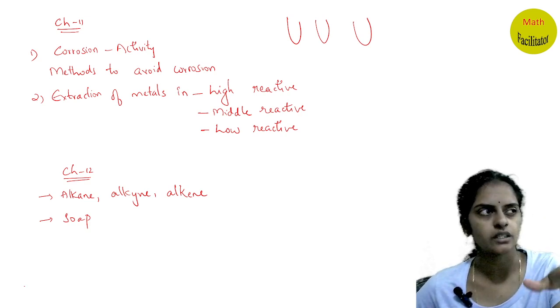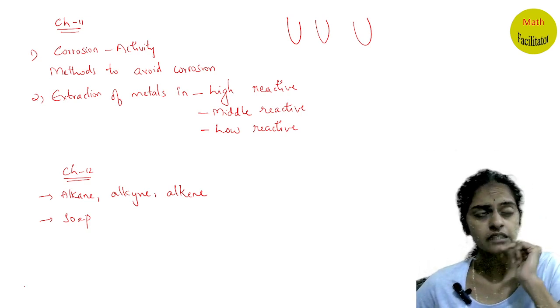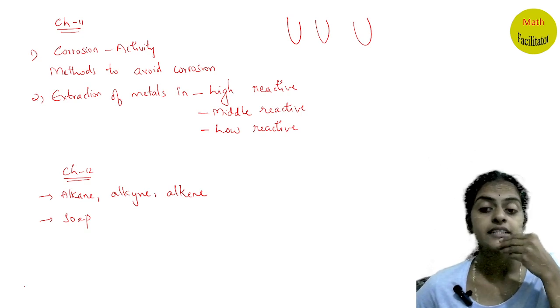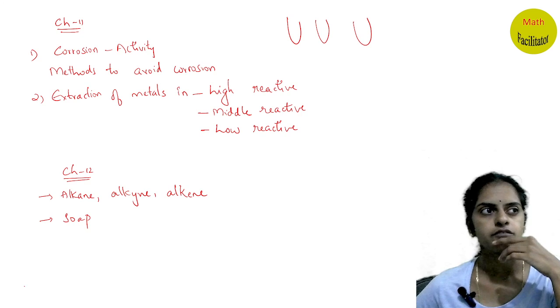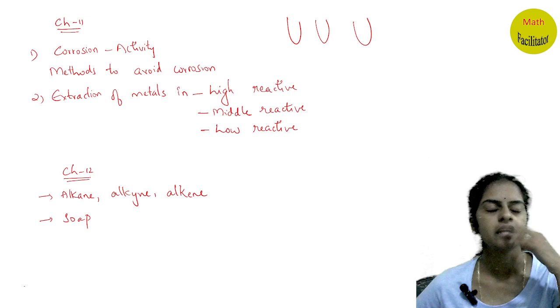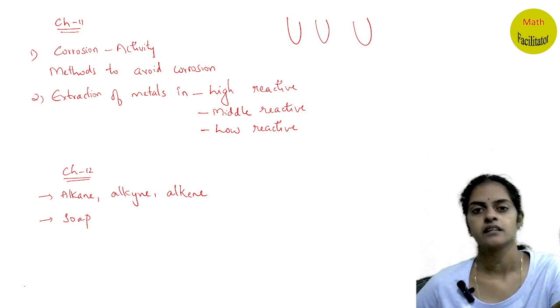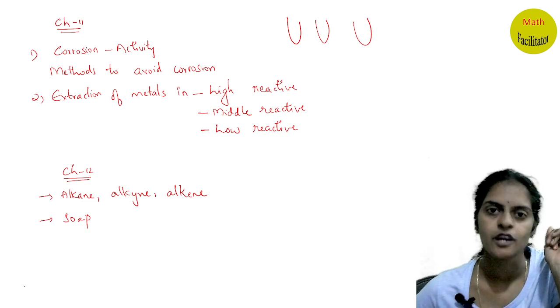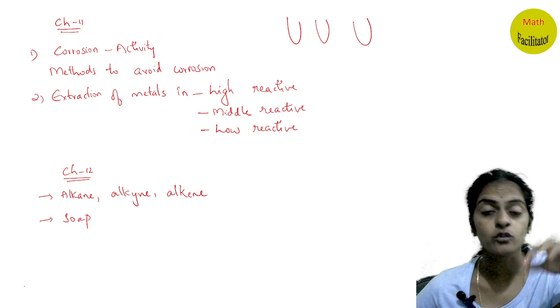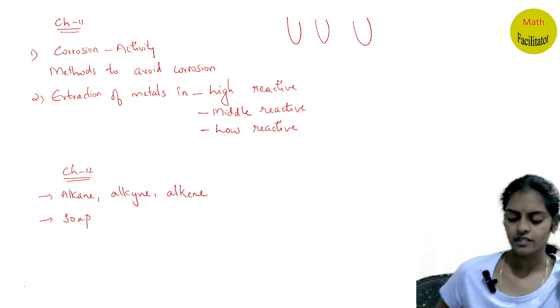Then chapter number 12, nothing much to learn. What is alkane, alkene, alkyne? So the general formula for alkane, alkene, alkyne. Then you may also learn the different forms of carbon, amorphous, crystalline. That's it. And for short, you can also learn why is carbon called versatile? Why is it versatile in nature? Then essay question is soap. What is saponification? Or how do you remove dirt with the help of soap? That last topic of your chapter 12. So do learn these questions.